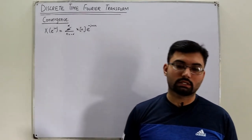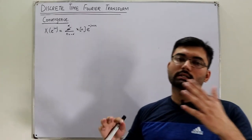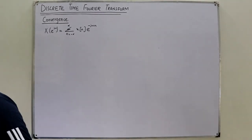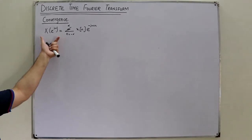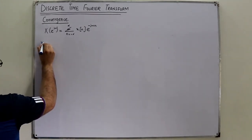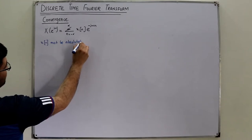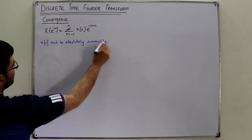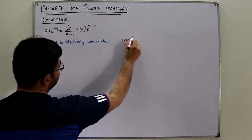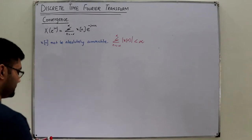We define certain rules or criteria for the convergence of this. The basic rules are the same as we've seen in the continuous time Fourier transform. The conditions are: what must x of n satisfy to make this summation a finite, converging sum? First, x of n must be absolutely summable. That means if you take the absolute value of x of n and sum it from negative infinity to positive infinity, this must give you a finite value.